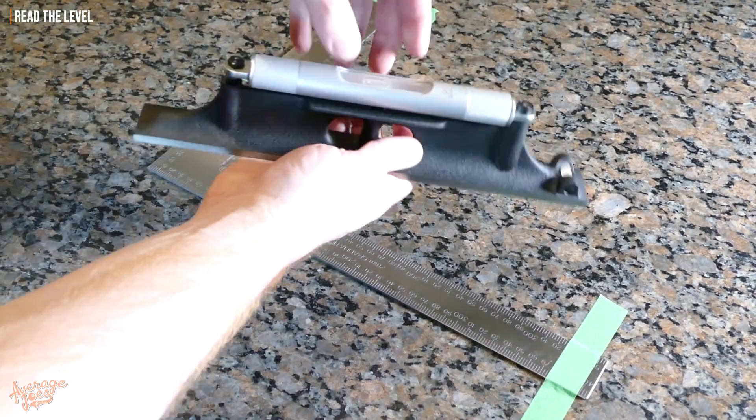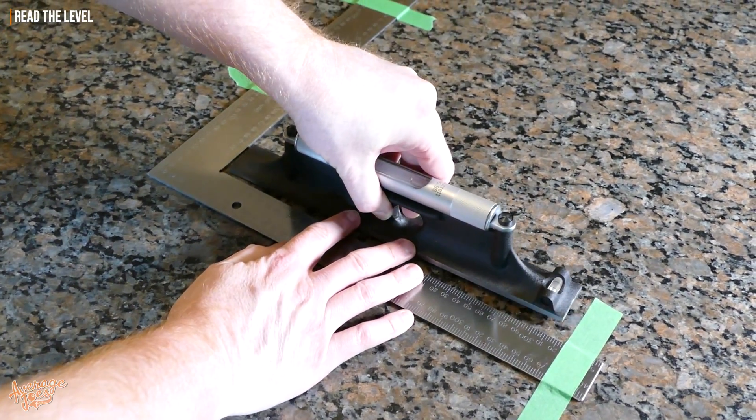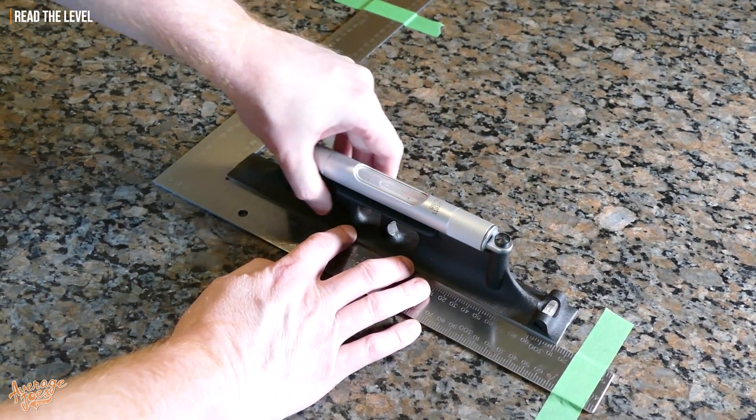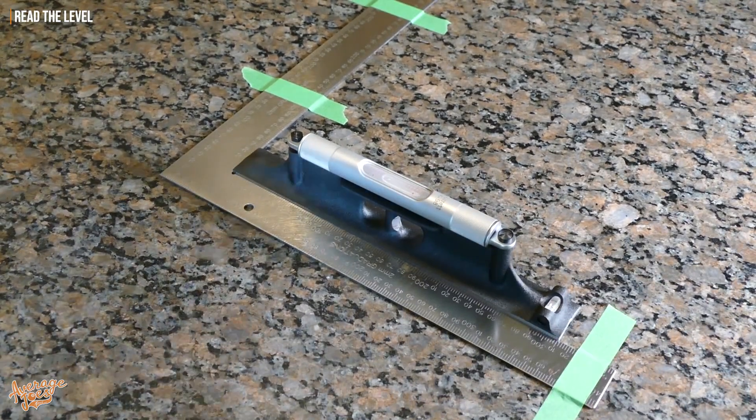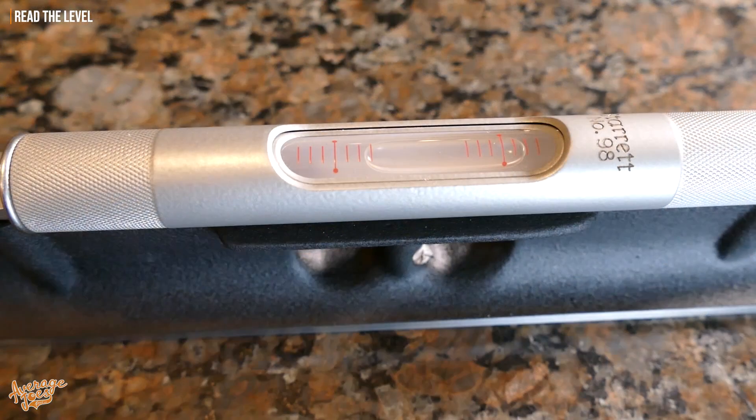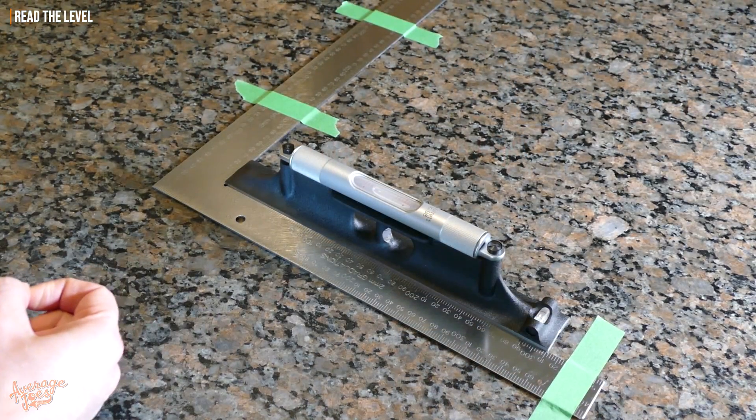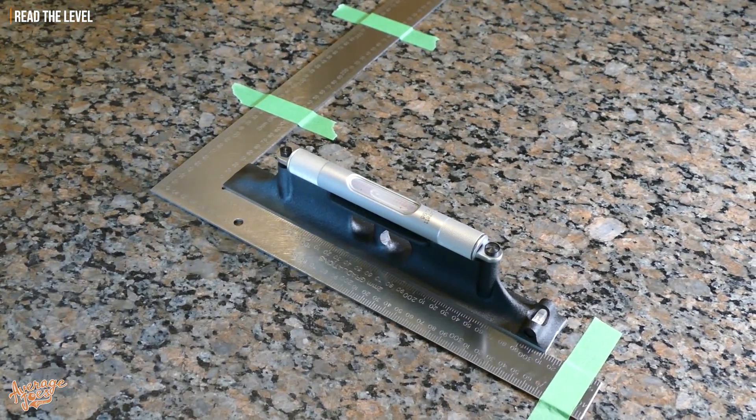So I'm just going to double check it. I'll spin it back to where it was originally and just double check it before I make my calibration adjustment. Yeah, and just as before I'm two graduations off center, ten thousandths of an inch to the right hand side there, so this definitely needs calibration.